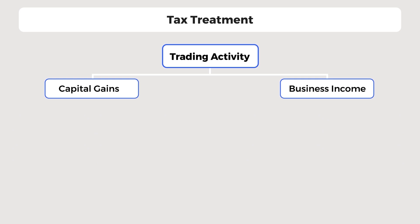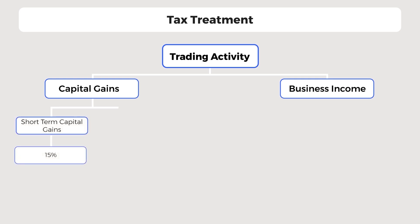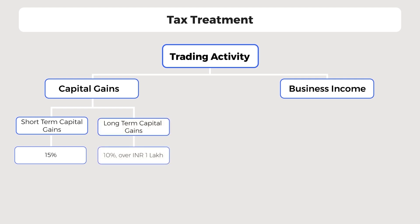Let's take a look at tax treatment. When STT is paid on equity shares and mutual funds, capital gains are taxed at special rates. Short-term capital gains are taxed at 15% and long-term capital gains above 1 lakh are taxed at 10%. However, business income arising from trading activity is taxed at the applicable income tax slab rate.